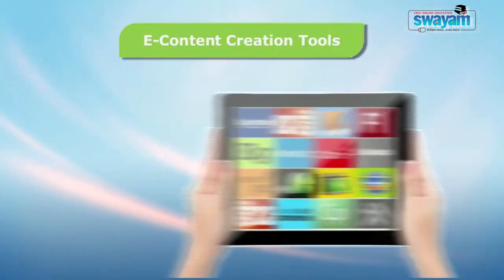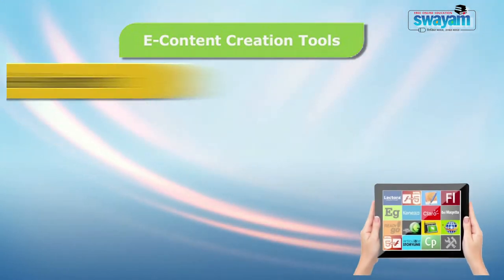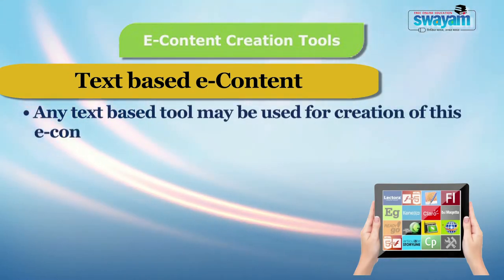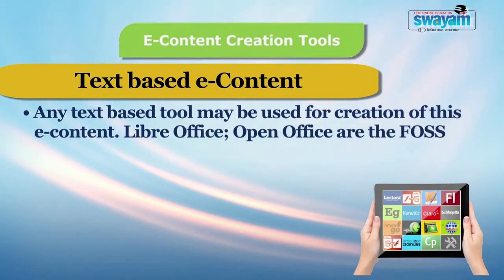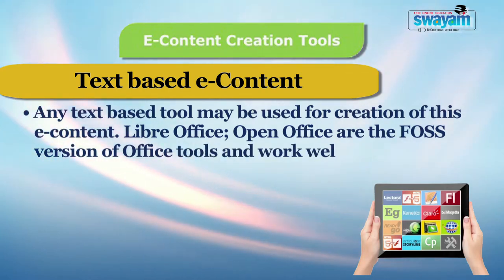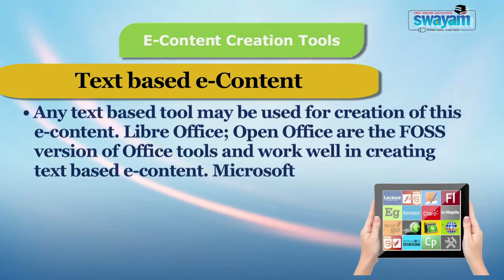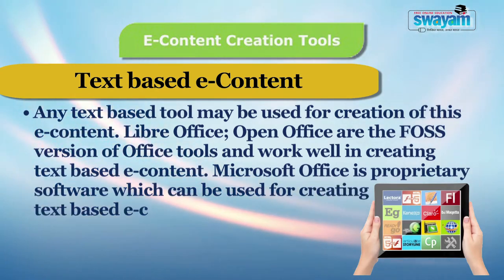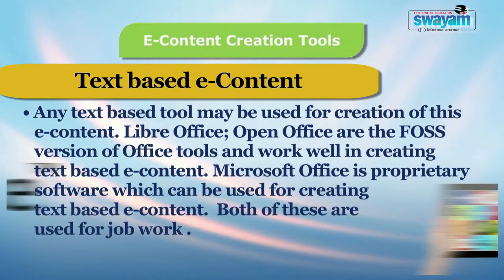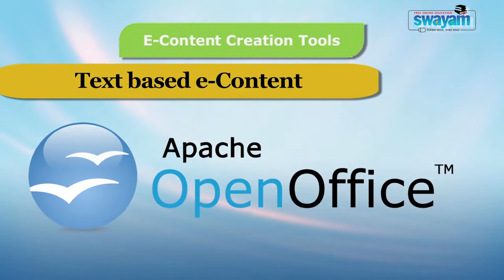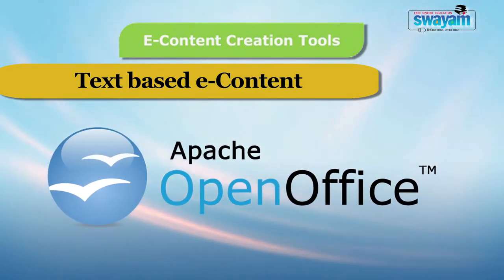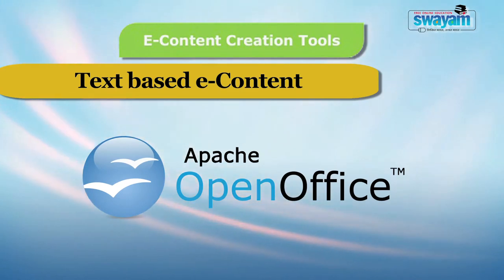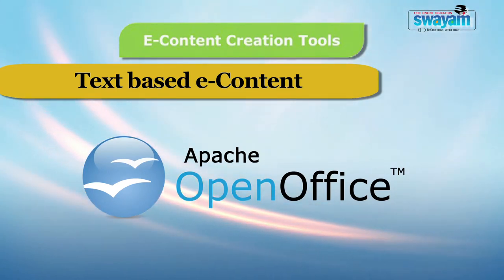Now let us discuss about e-content creation tools, starting with text-based e-content. Any text-based tool may be used for creation of this content, like LibreOffice and OpenOffice. They work well in creating text-based e-content. Microsoft Office is a proprietary software which can also be used for creating text-based e-content. Apache OpenOffice is an open source office productivity software, whose main components are for word processing, spreadsheets, presentations, graphics and databases. Text-based e-content can also be developed through collaboration using web-based tools like Etherpad and Wiki.